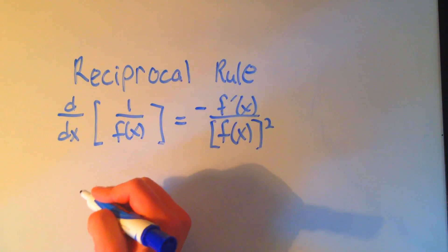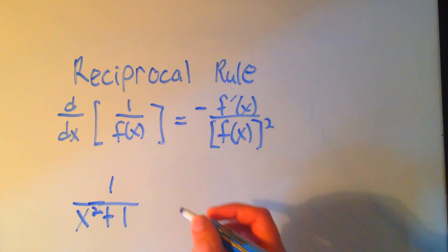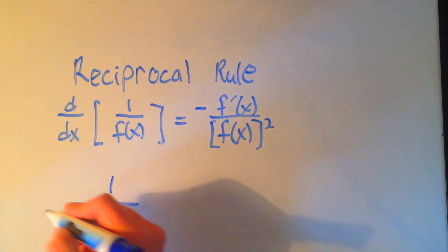For instance, if I wanted to take the derivative of 1 over the quantity x squared plus 1, using the reciprocal rule...